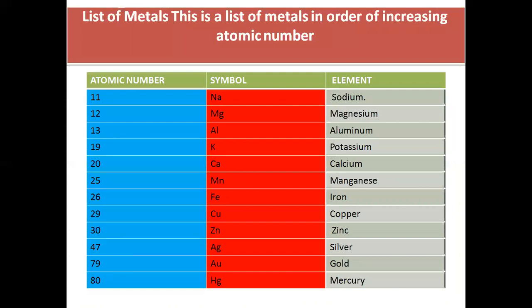This is the list of metals according to their atomic number: Sodium (Na) = 11, Magnesium (Mg) = 12, Aluminium (Al) = 13, Potassium (K) = 19, Calcium (Ca) = 20, Manganese (Mn) = 25, Iron (Fe) = 26, Copper (Cu) = 29, Zinc (Zn) = 30, Silver (Ag) = 47, Gold (Au) = 79, Mercury (Hg) = 80.